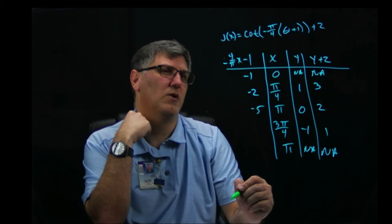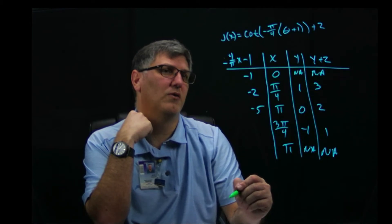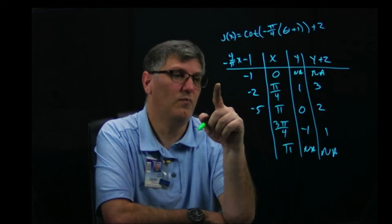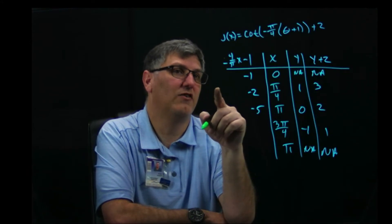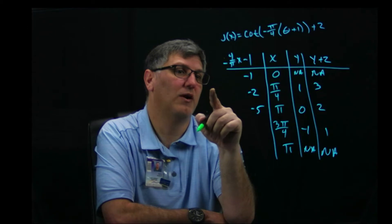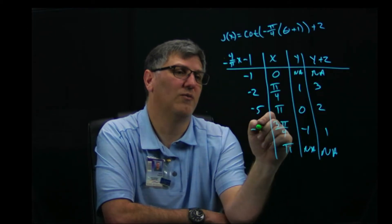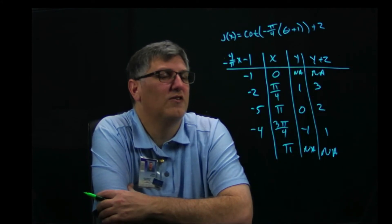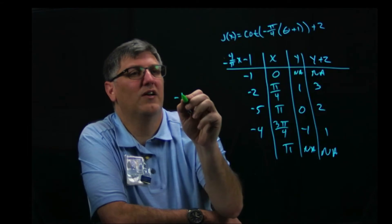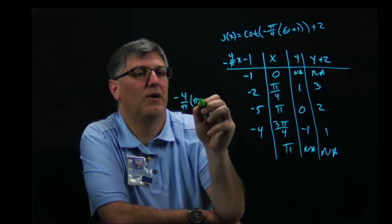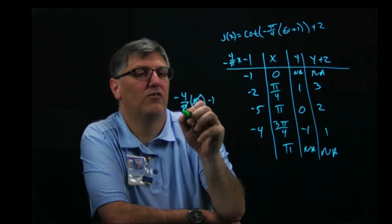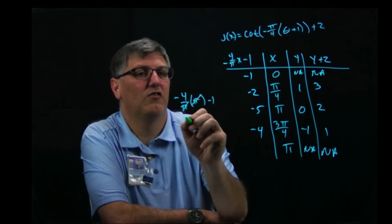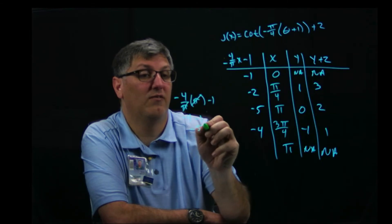So zero gives me negative one. Pi over four gives me negative one. Pi is going to give me negative four minus one, which is negative five. Three pi over four... Yeah, my pi's cancel. That gives me negative three minus one is negative four. Something is wrong here with my arithmetic.